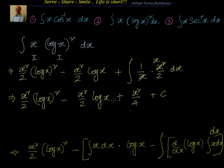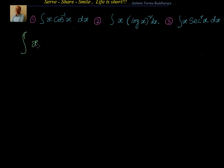The third example is the integral of x·sec²x dx. For ∫x·(log x)² dx we applied integration by parts twice because we got ∫x·log x, which required another application. Now for x·sec²x, we have an algebraic function and a trigonometric function. By ILATE, algebraic comes before trigonometric. So x is the first function and sec²x is the second function.